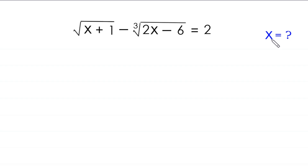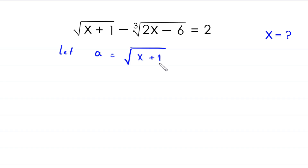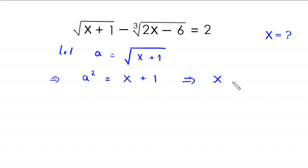Let's start. First, we suppose that this expression is equal to a. Let a equal the square root of (x+1). If we square both sides, this implies that a squared is equal to x plus 1. Moving 1 to the left hand side, this implies that x is equal to a squared minus 1.